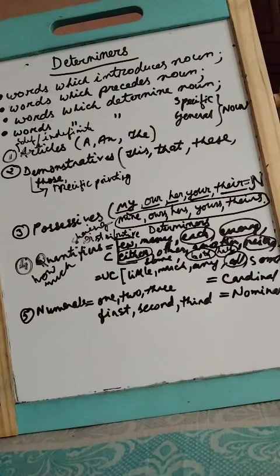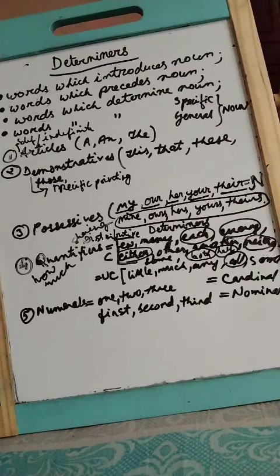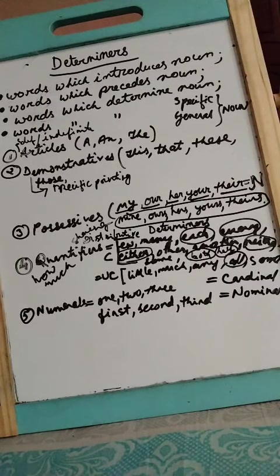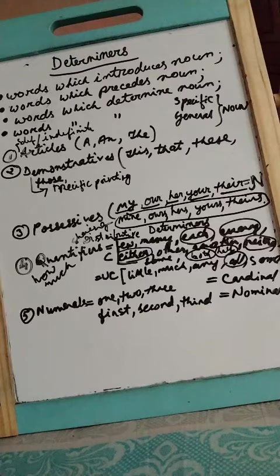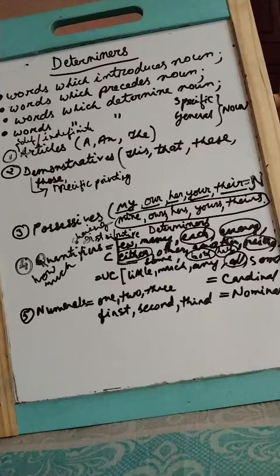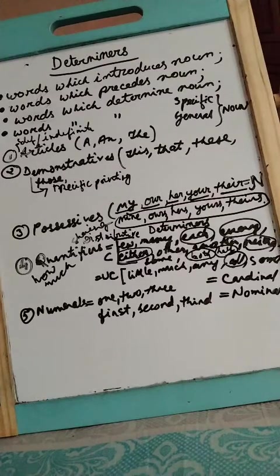Fourth category is quantifiers. There are many quantifiers. What are quantifiers? From the name you can understand - they talk about the quantity, how much. Look here: few, many, each, every, either, other, another, neither, like, much, any, all, some. These all show quantity, these determiners show quantity.